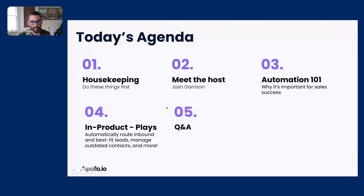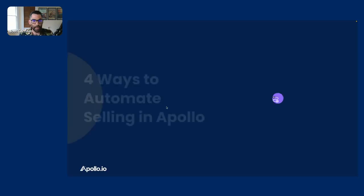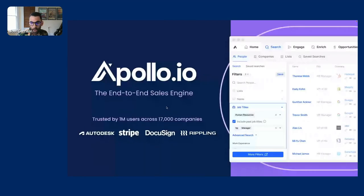My name is Josh Garrison and I have a great webinar for you today. We're going to go through some housekeeping, I'll talk about myself briefly, then get into automation. I'll spend a few minutes in slides talking about the why, then hop into Apollo and show you how to build plays to automate your processes, followed by about 15 minutes of Q&A. This webinar is sponsored by Apollo — the world's only end-to-end sales engine — and you can make a free account at apollo.io.